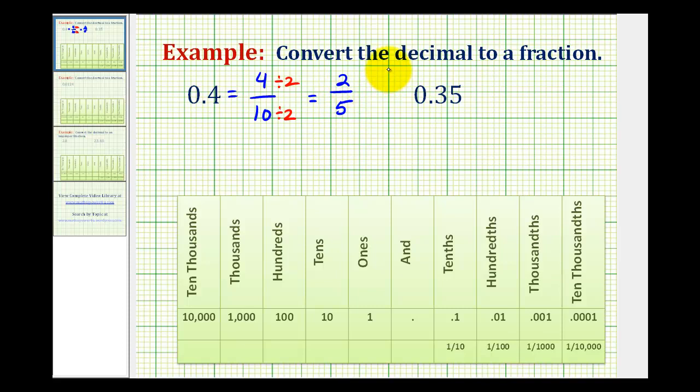Let's take a look at our second example. Here, notice the 5 is in the hundredths place value. So we would read this decimal as 35 hundredths. So in fraction form, it's 35 over 100.